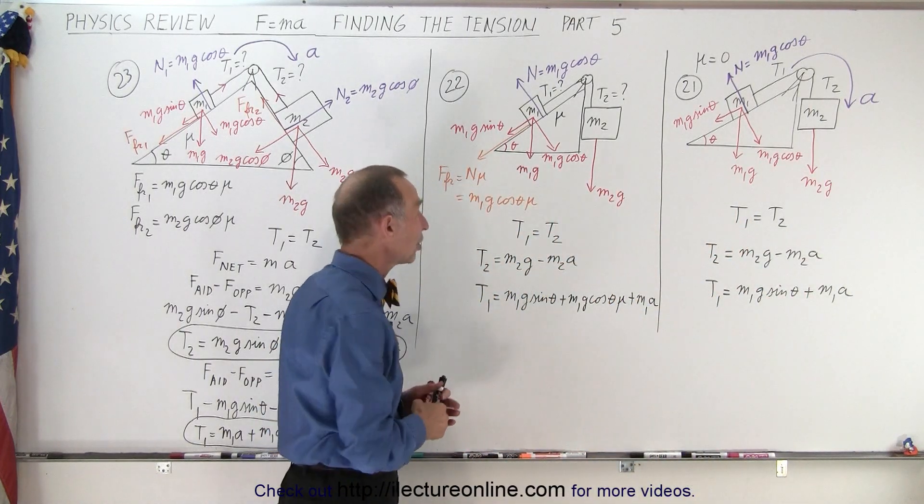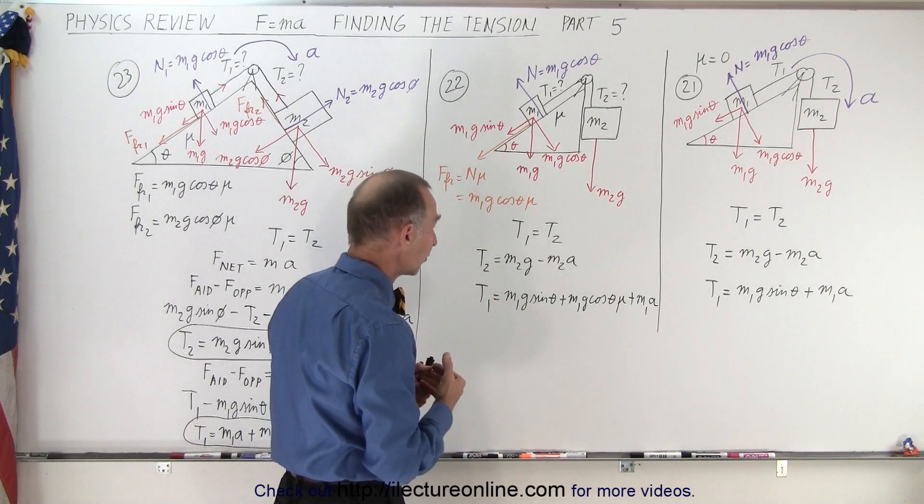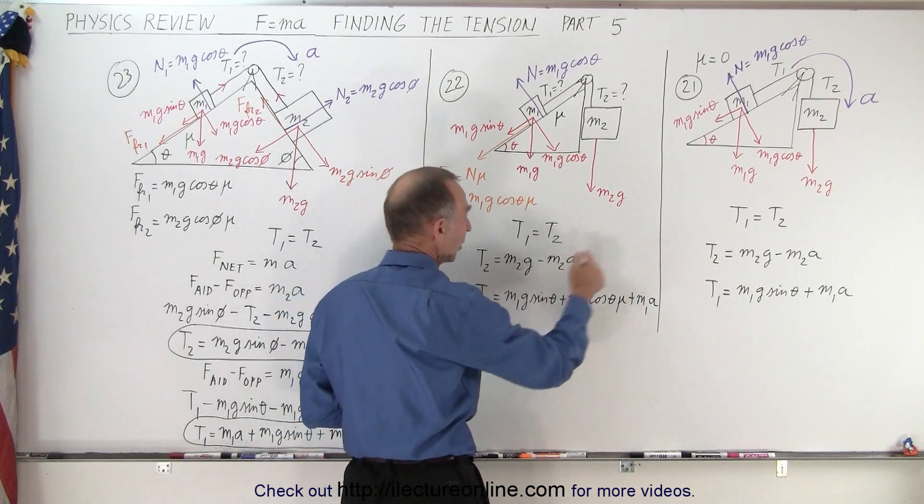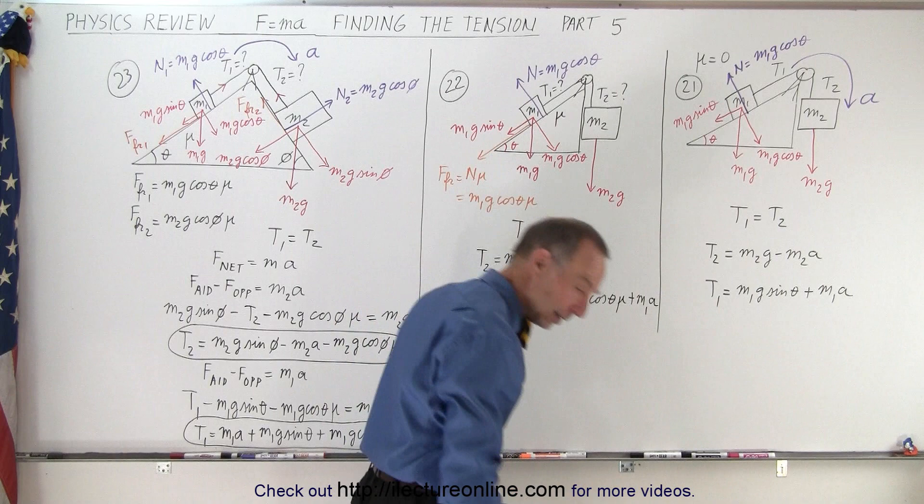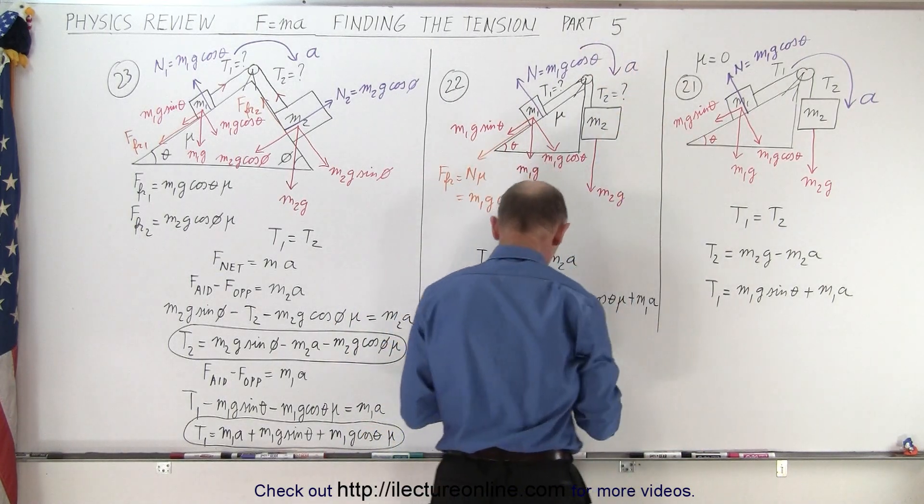What if there's friction? How does that change things? Well the tension T1 and T2 will still be the same. They'll still be equal to each other. T2 will still be M2G minus M2A just like before, because it's assumed to be accelerating this way. Let me indicate that here. So we're assuming the acceleration will be in this direction.